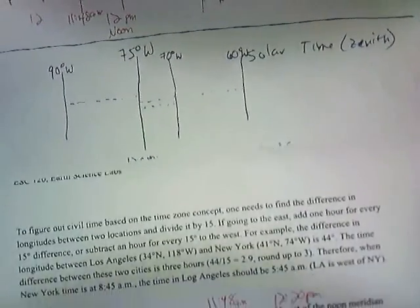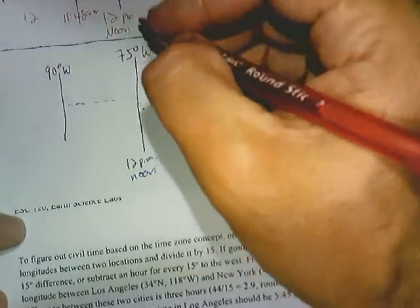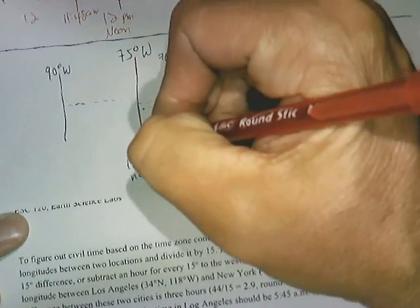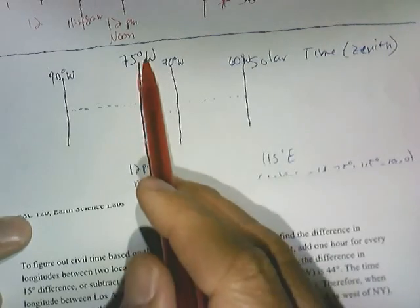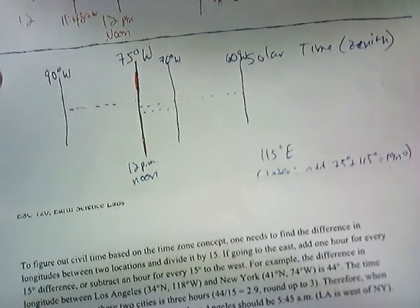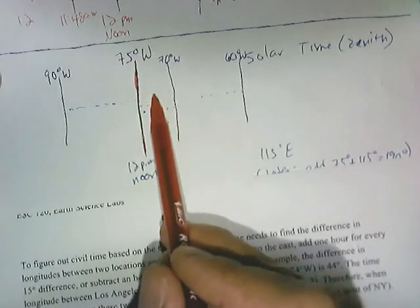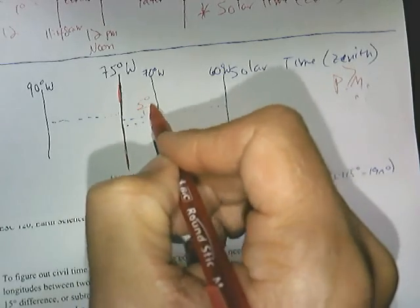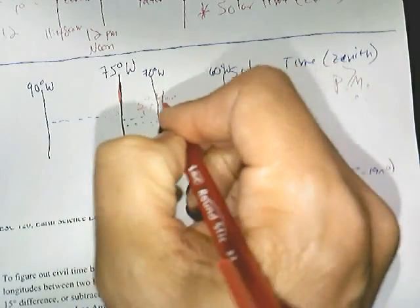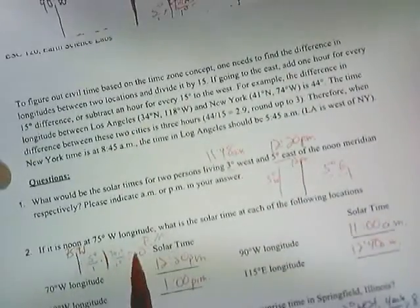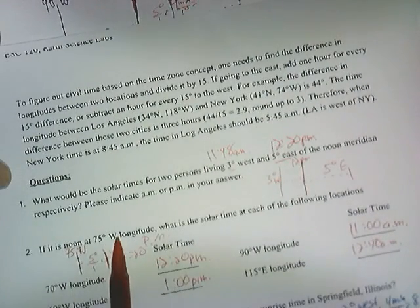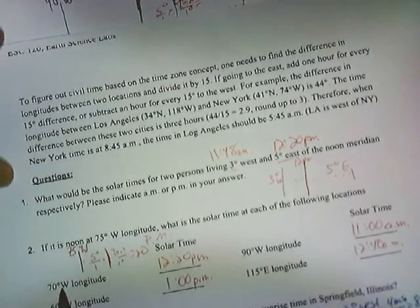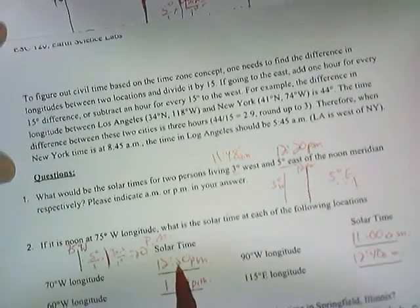Let me do this one more time to make sure we reemphasize the pattern. 75 degrees west is my reference, and 70 degrees west is east of it — it's closer to the prime meridian. There's a 5 degree difference, so I take 5 degrees times 4 minutes per degree and find that it's 20 minutes later in terms of solar time.